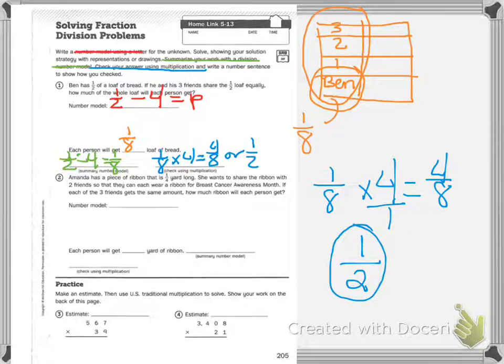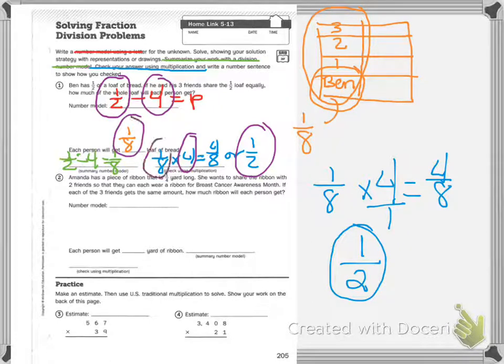I'm going to circle all of my parts. So here's my one half, one half. Four, four. And then I know we get an eighth. There's an eighth.